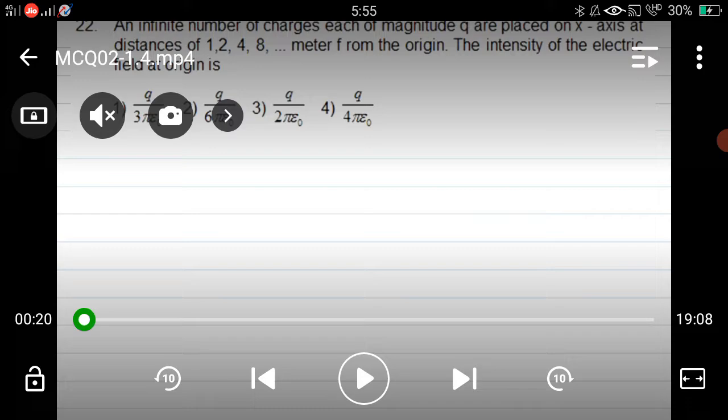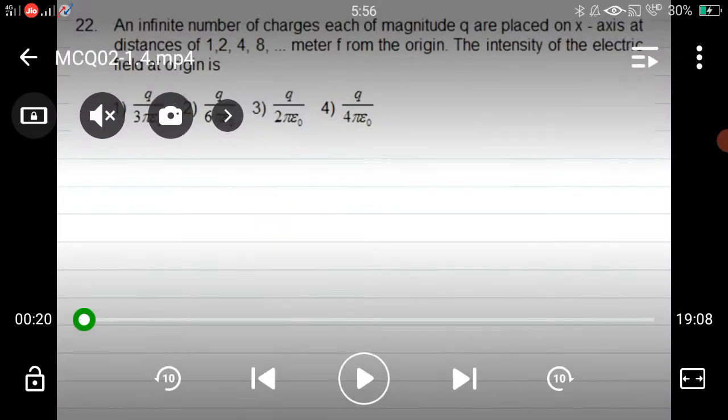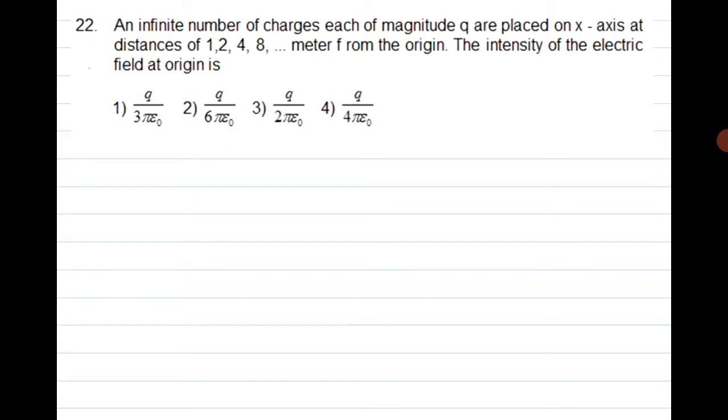Hello dear students, let us discuss the remaining questions. Up to question number 21 we have already discussed in the previous class. Question number 22 is an infinite number of charges, each of magnitude Q, placed on the x-axis at x equal to 1, x equal to 2, x equal to 4, x equal to 8 meter from the origin.